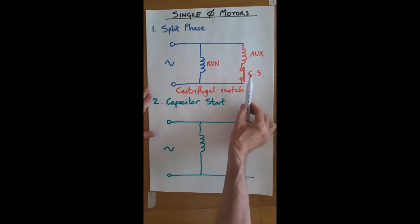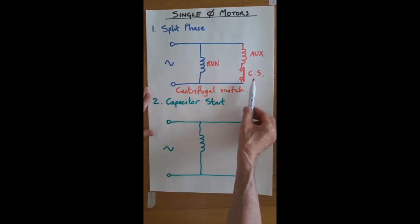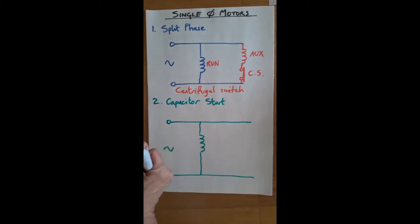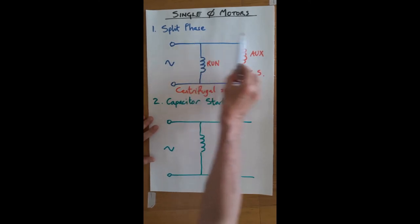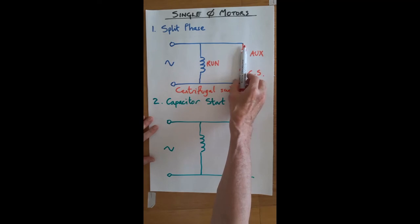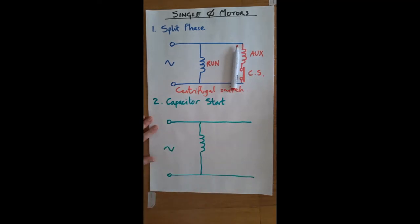Okay, so the centrifugal switch works on rotational speed. The faster it goes, then what will happen is as the motor reaches a particular speed, the contacts will open and take this out of circuit. So coming back to these two windings in the motor, the run winding and the auxiliary winding are mounted at 90 degrees to each other.